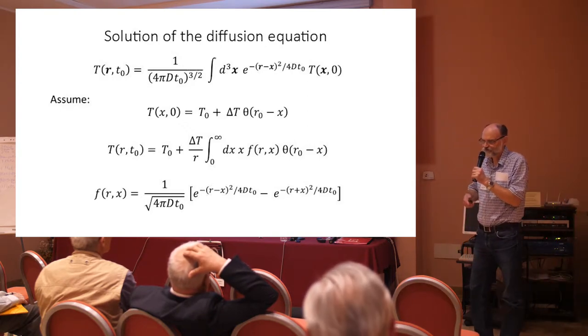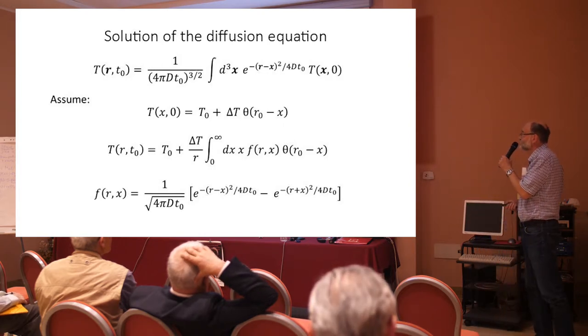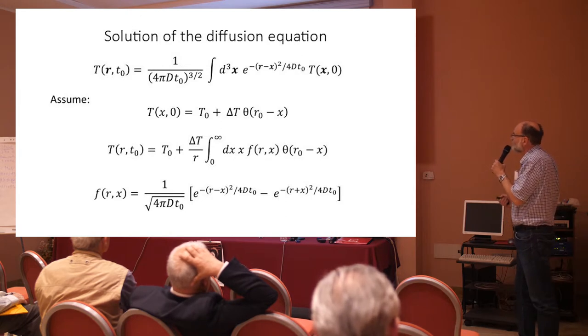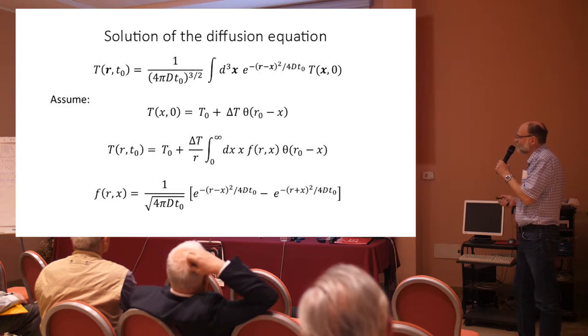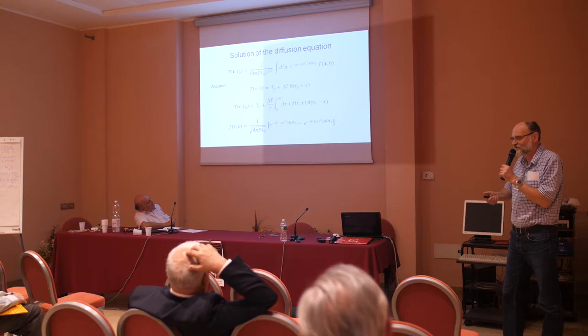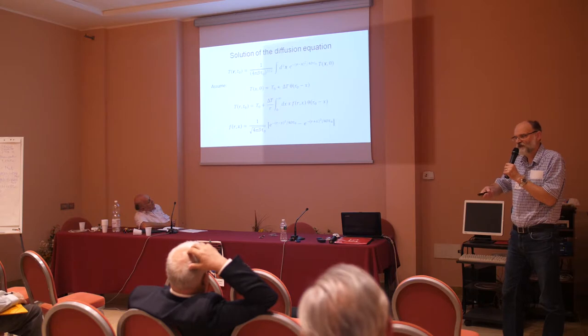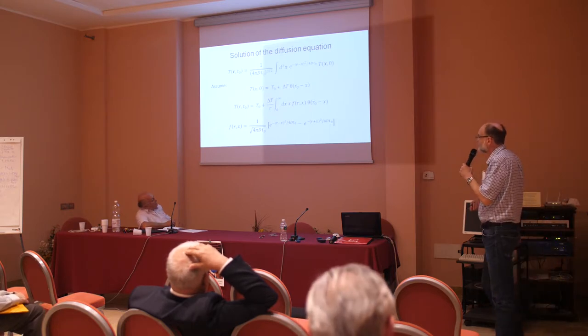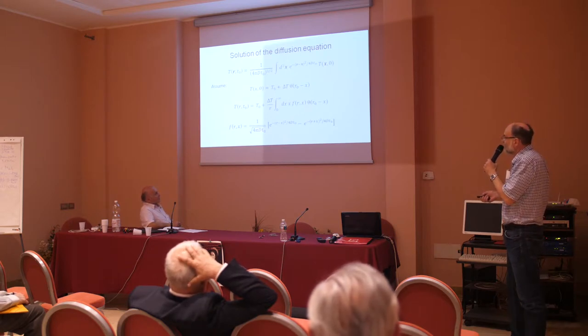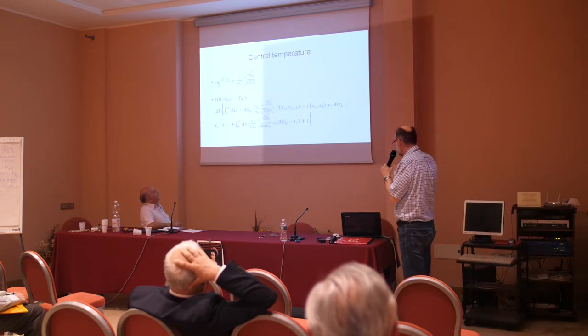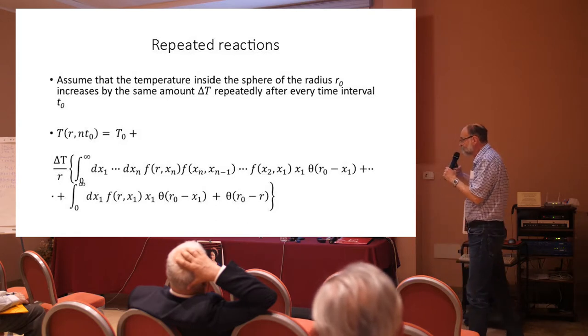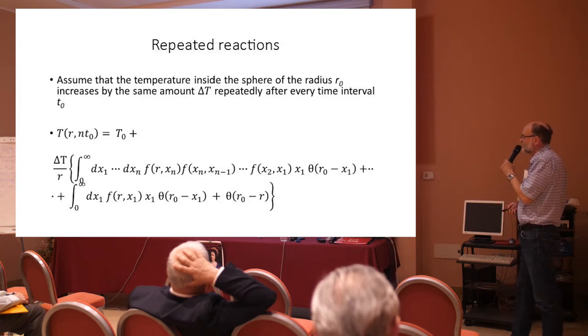Using this spherical symmetry, I can write this thermal distribution in this way, where this kernel function is given as the combination of two exponential functions. Now I will iterate this solution of diffusion equation such that at time T₀, the next initial distribution is given plus another temperature increase arising from the next fusion reaction.